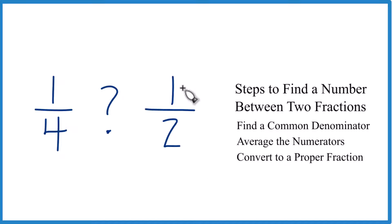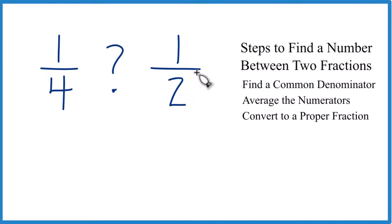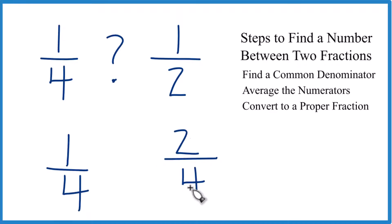So we could just double the numerator and the denominator here. So 1 would become 2, 2 would become 4. So now we have 2/4. Let's keep our 1/4 the same. And 1/4 and 2/4, that makes it a lot easier. Same denominator.